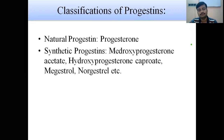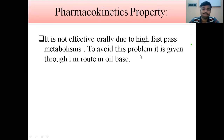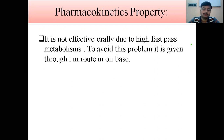Just like estrogen, progestins are divided into natural progestins and synthetic progestins. Natural progestins include progesterone itself. Synthetic progestins include medroxyprogesterone acetate and hydroxyprogesterone caproate. Synthetic progesterones are popular because of their longer duration of action and potency, and various formulations are available. Progesterone is not effective orally due to high first-pass metabolism, so it is given by the intramuscular route in an oil base to improve duration of action.